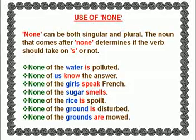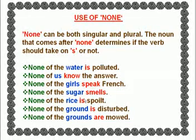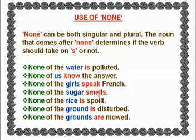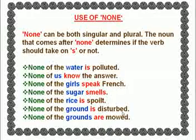Use of 'none.' None can be both singular and plural. The noun that comes after 'none' determines if the verb should take on an S or not. 'None of the water is polluted' — water is a non-count noun, it is one body, so the verb takes on S. 'None of us know the answer' — us is plural, so no S. 'None of the girls speak French' — girls is plural. 'None of the sugar smells' — sugar is a non-count noun, so it takes on verb S. 'None of the rice is spoilt.' 'None of the ground is disturbed.' 'None of the grounds are mowed.'